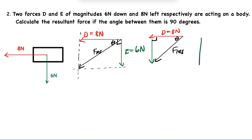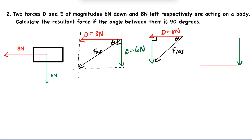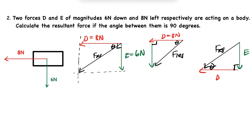You can also start with force E (6 Newtons downwards) first, then draw force D (8 Newtons to the left), and the resultant still goes from the tail of the first vector to the head of the last vector. The resultant points in the same direction regardless of the order, and the angle is confirmed at 90°.